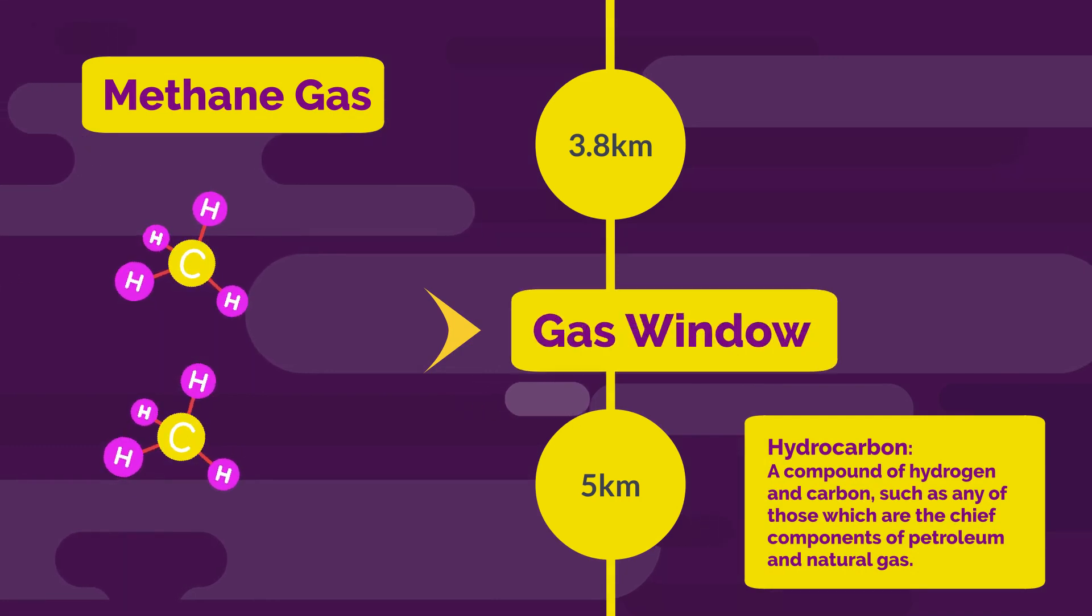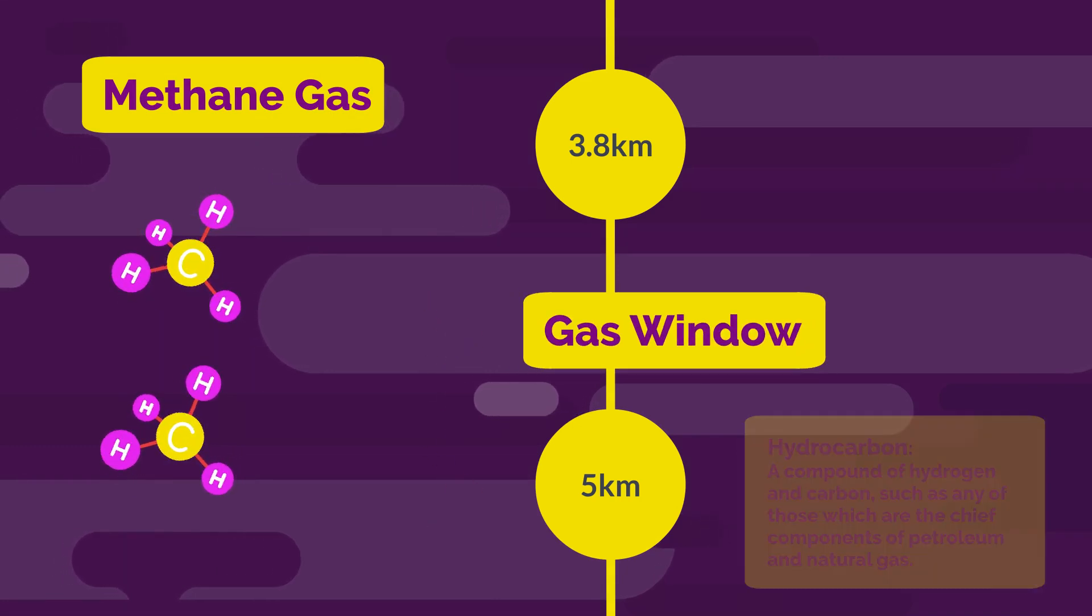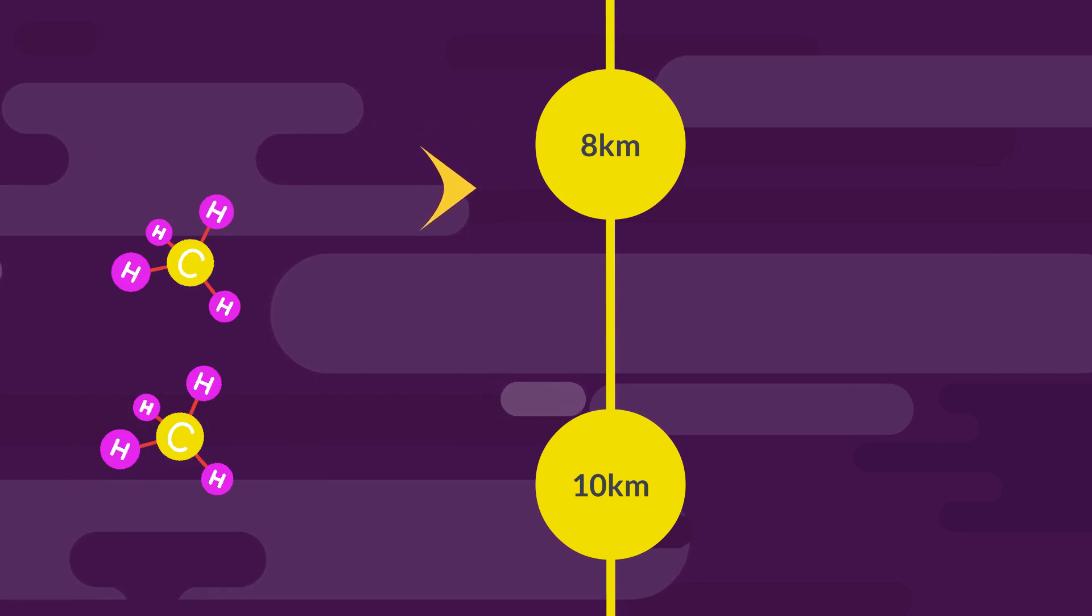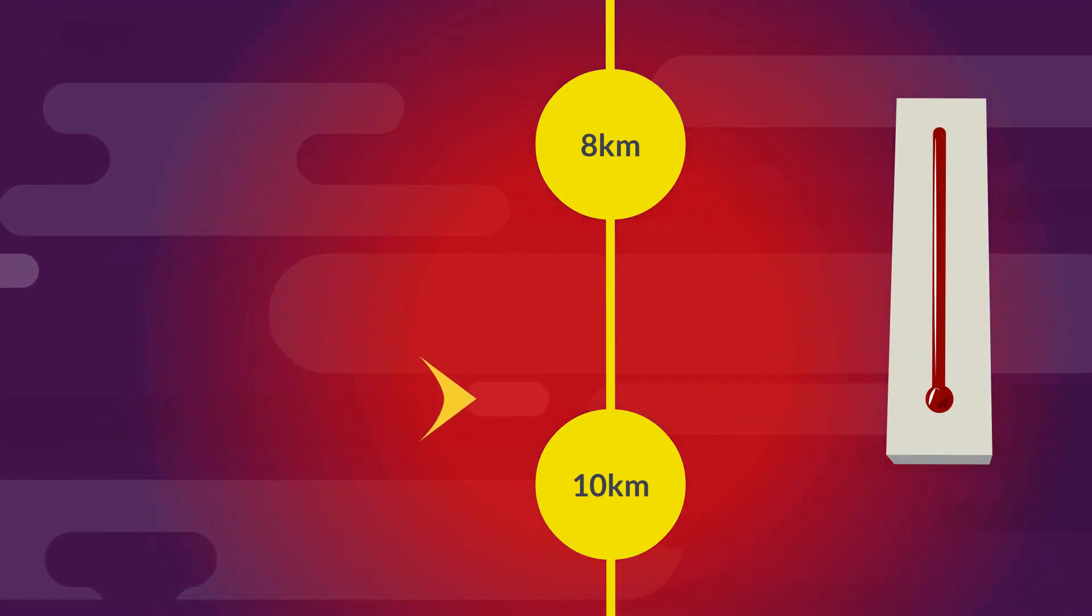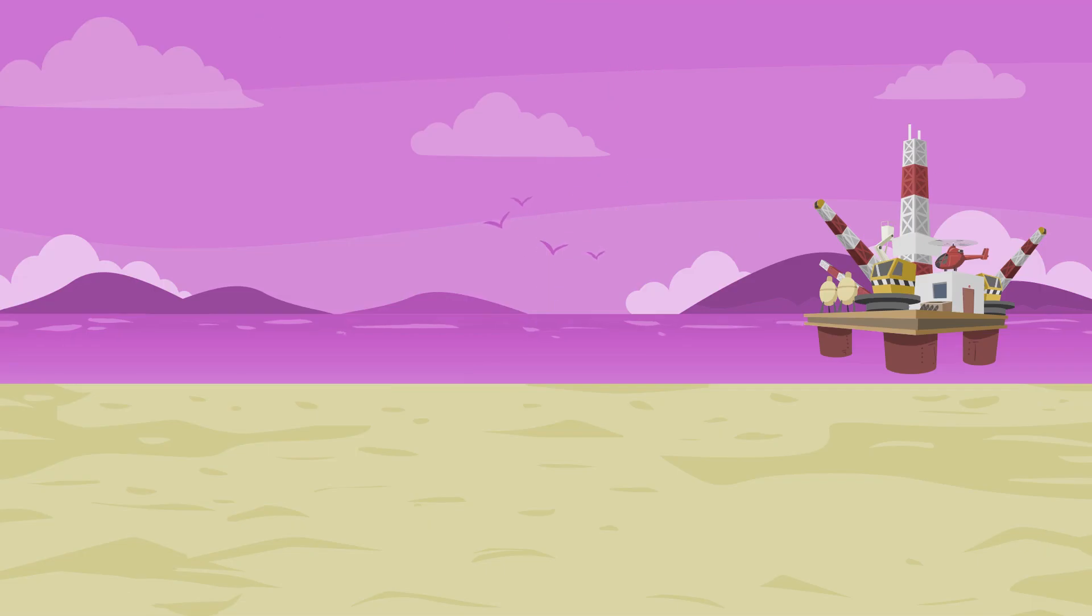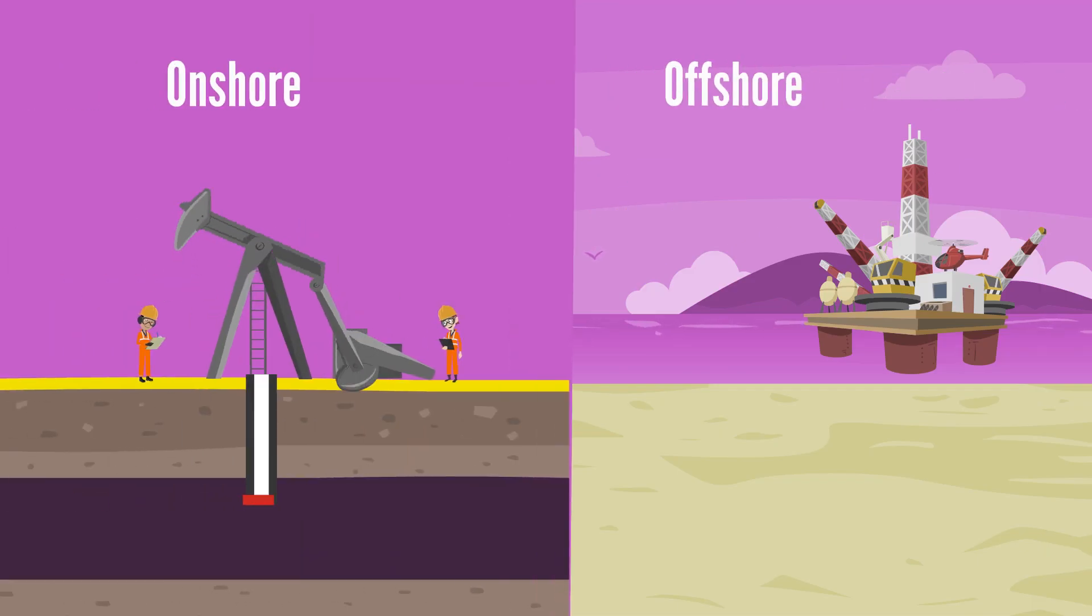This depth interval is known as the gas window. There are no hydrocarbons below a depth of 8 to 10 kilometers because they are destroyed by high temperatures. Presumably, these figures may vary if it's onshore or offshore.